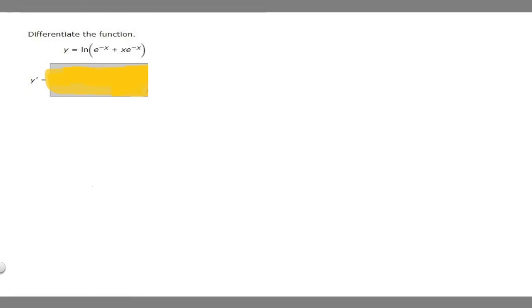In this problem, we're told to differentiate the function y equals ln of (e to the minus x plus x times e to the minus x). To solve this, you need to know that the derivative of ln(x) is equal to 1 over x. Now that we know that, we can solve it.